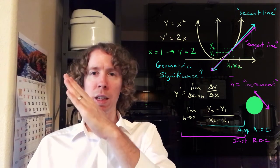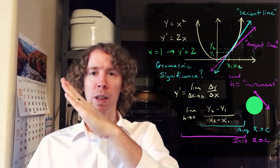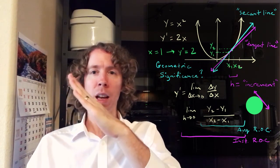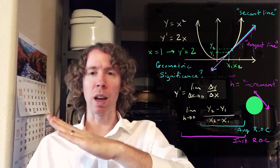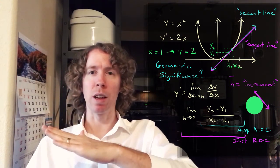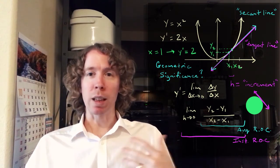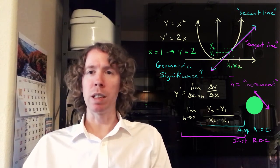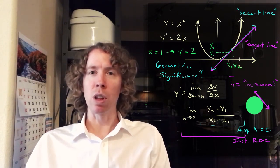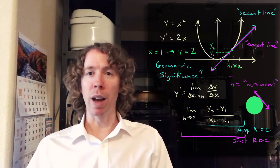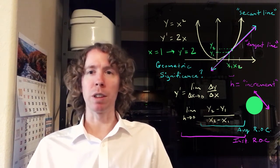So when you take the secant line and you let H go to zero, take the limit as H goes to zero, that secant line turns into a tangent line. It limits to the tangent line. So when you take the limit of the slope of the secant lines, you're getting the slope of the tangent line. That's what the derivative is. That's what it gives you geometrically.